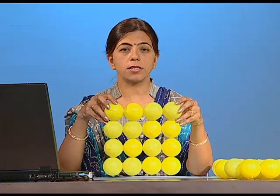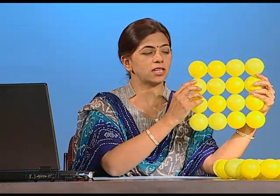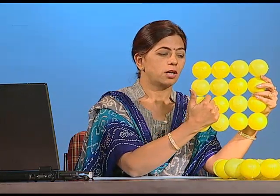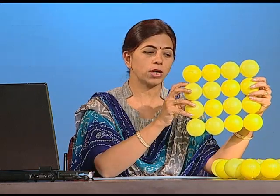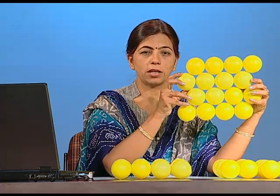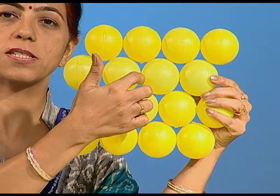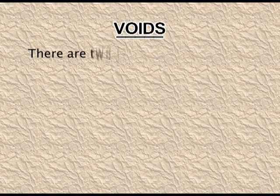We have now seen one-dimensional, two-dimensional, and three-dimensional packing. Despite closely packing the atoms, you can see empty spaces. These vacant spaces are known as voids, or interstitial spaces. Voids are present in both square close packing and hexagonal close packing, and they are of two types: the tetrahedral void and the octahedral void.